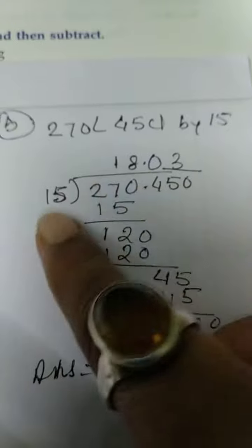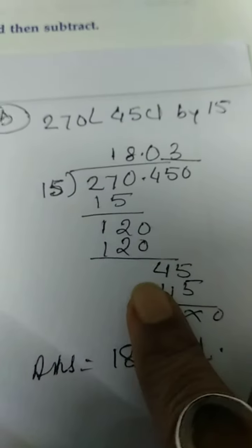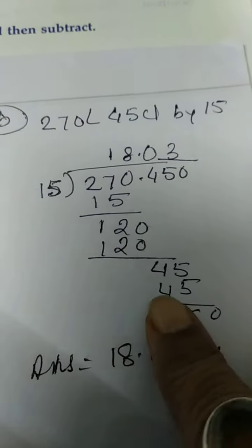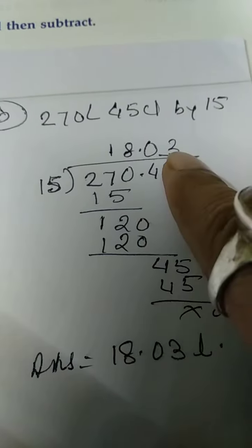And L is 0. 15. 1 times 15 is 15. 1. 20. 8 times 15 is 120. 4 is coming down, it is not divisible, so 0. 5 is coming down, 3.